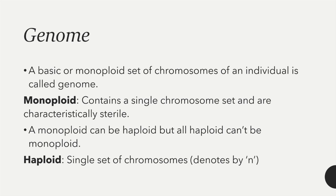The first topic is genome. A genome is nothing but the haploid set of chromosomes of an individual. A monoploid contains a single chromosome set and is characteristically sterile in nature. This monoploid can be haploid, but all haploids can't be a monoploid. The haploid means a single set of chromosomes, which is denoted by n.